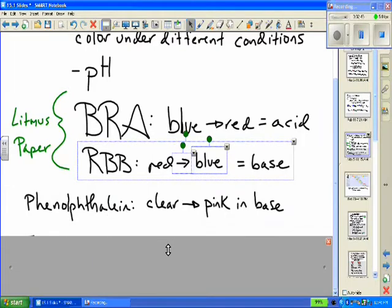The indicator we most commonly use in honors chemistry is phenolphthalein. Phenolphthalein is clear in color at acidic or neutral pHs, but will turn bright pink, almost a magenta, in a base.